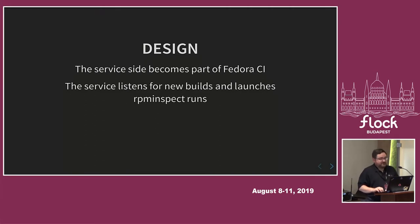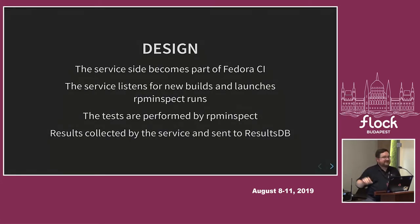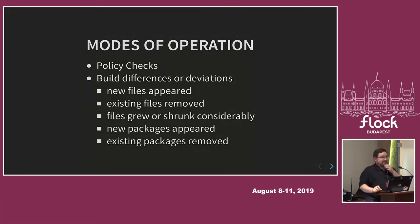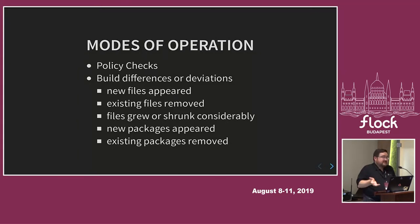The service listens for new builds and launches RPM Inspect runs. RPM Inspect does those tests, and then — this hasn't been done yet but is the next step — we get those results into results DB and tie it into the rest of the chain. One thing RPM Diff could not do is just run against one build, which I thought would be really useful for developers. For example, if there's a packaging policy change in Fedora, you can check your latest build and see if it complies.